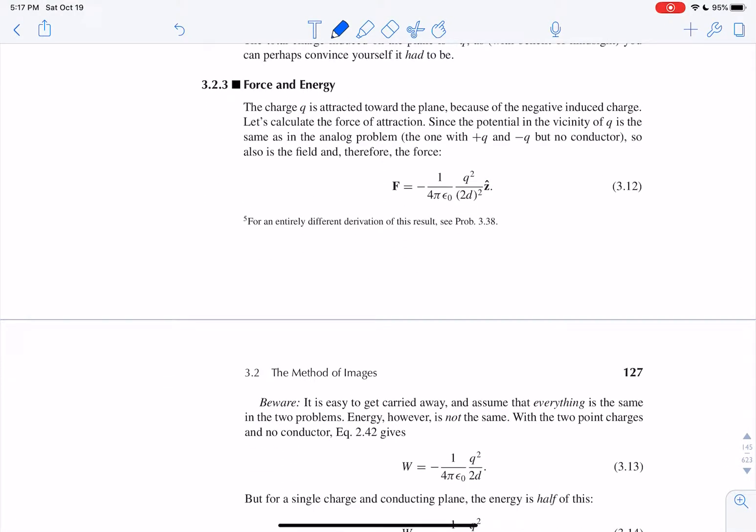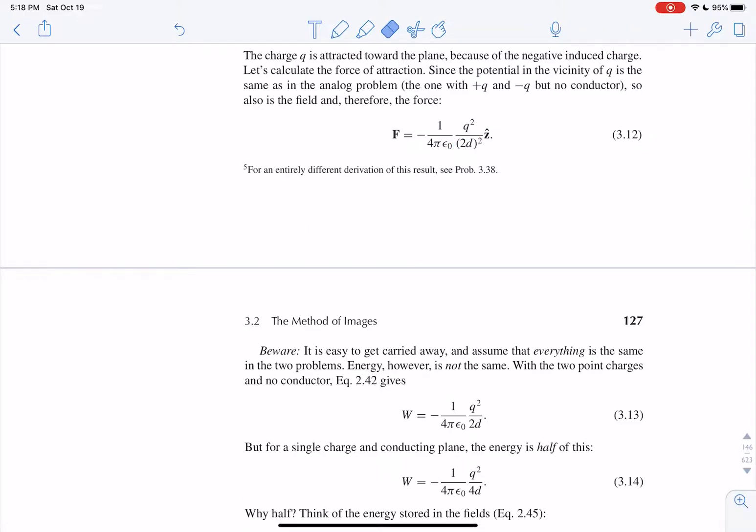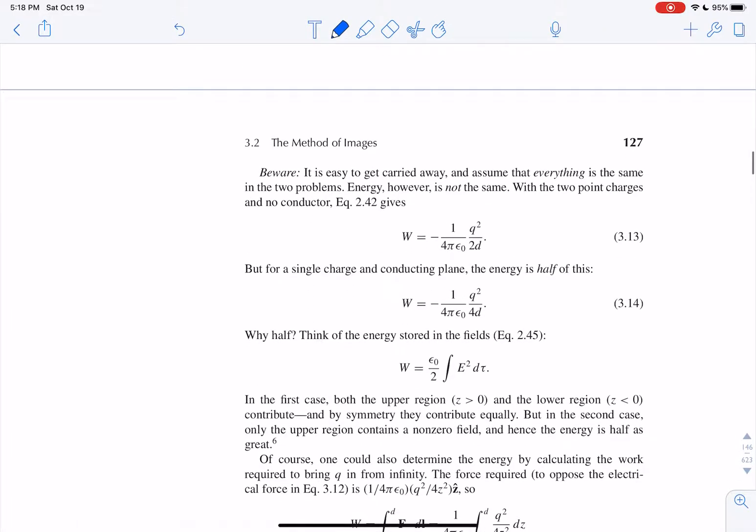All right, force and energy, so 3.2.3. If we know the force is k q1 q2 over r squared, or q squared over 2d squared, and we still got our method of images here. So our separation is 2d. So we have 2d squared in the z-hat direction.